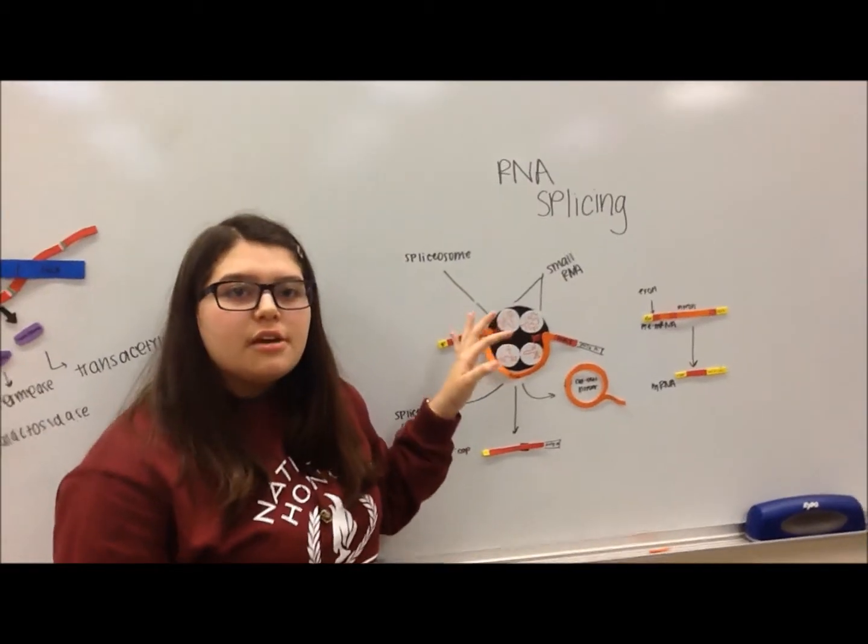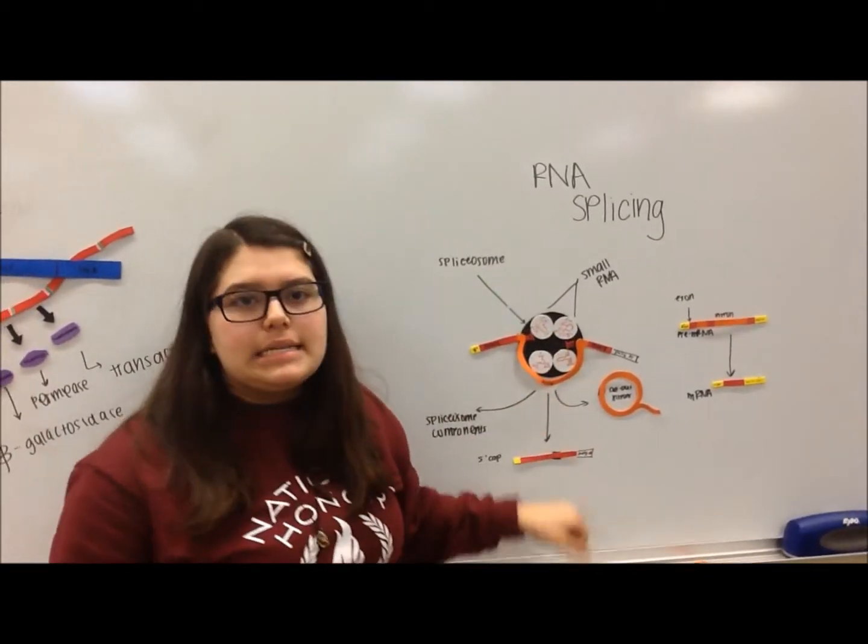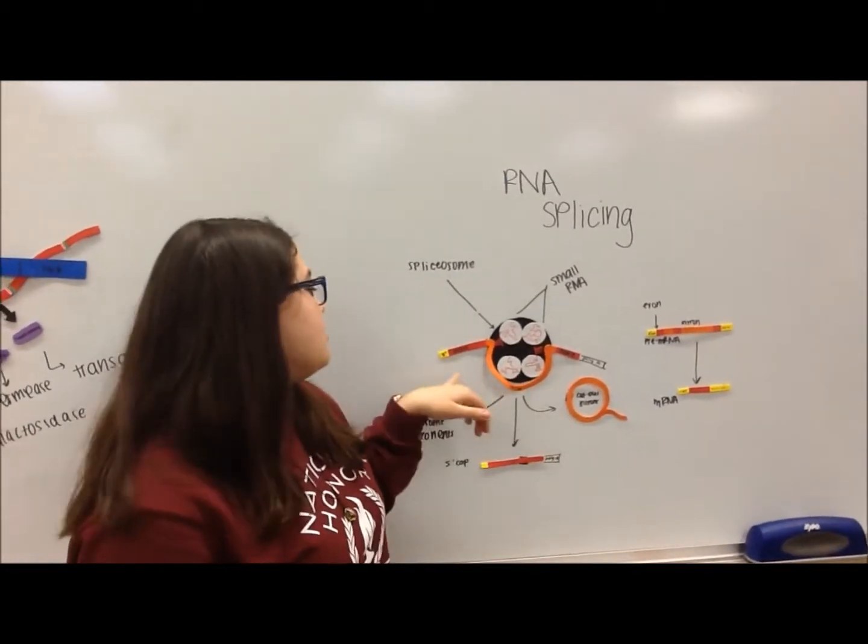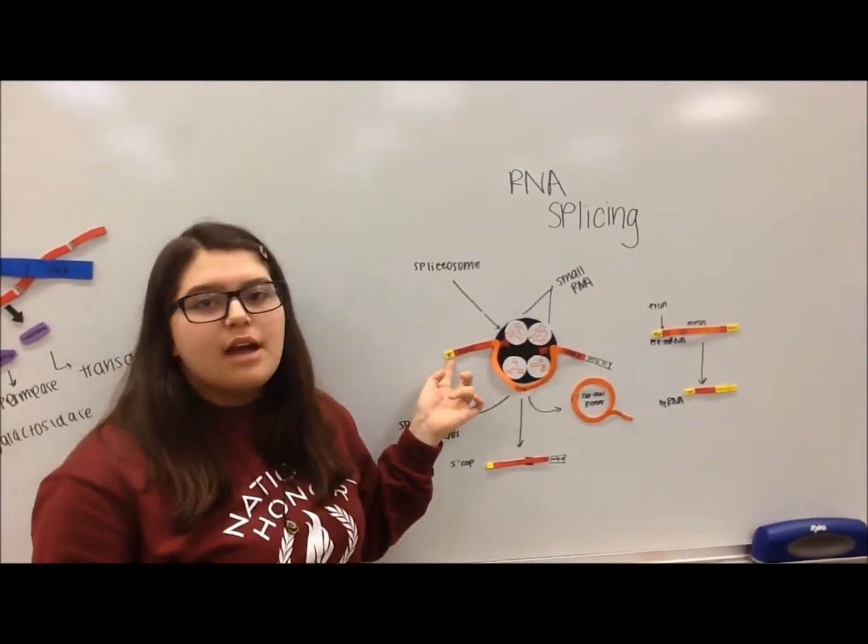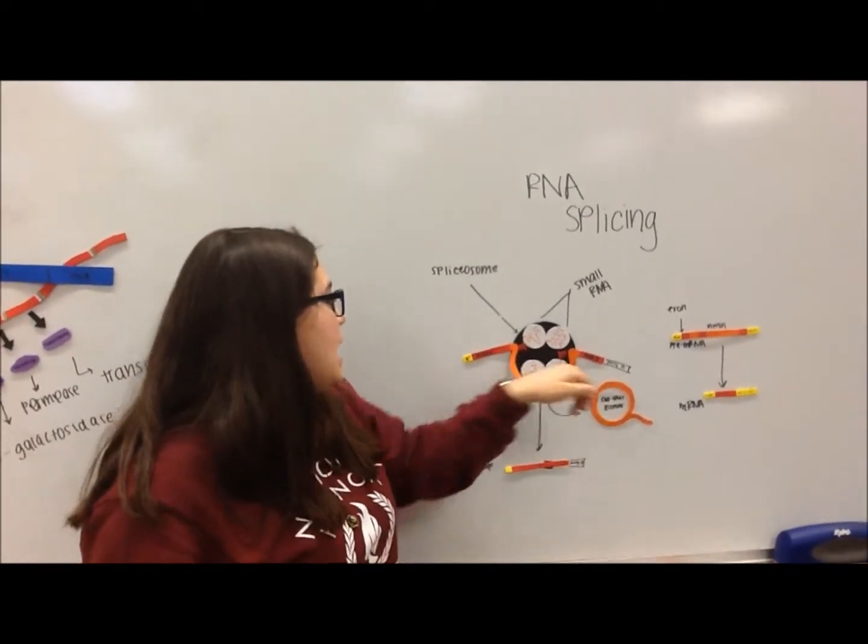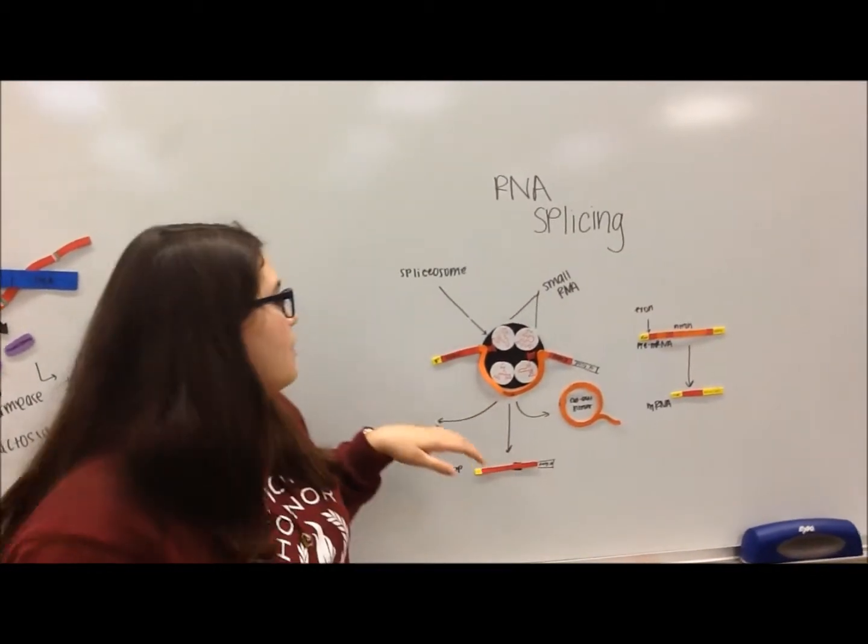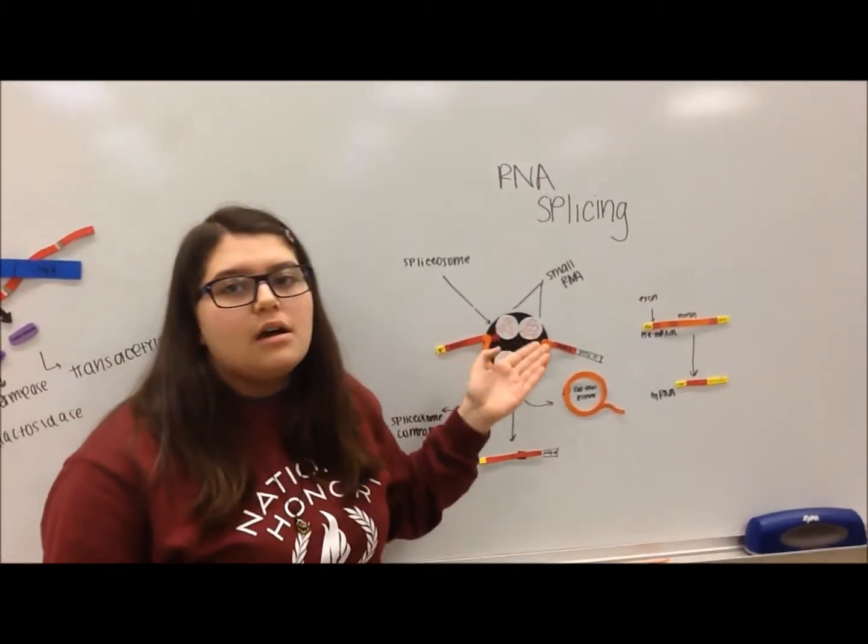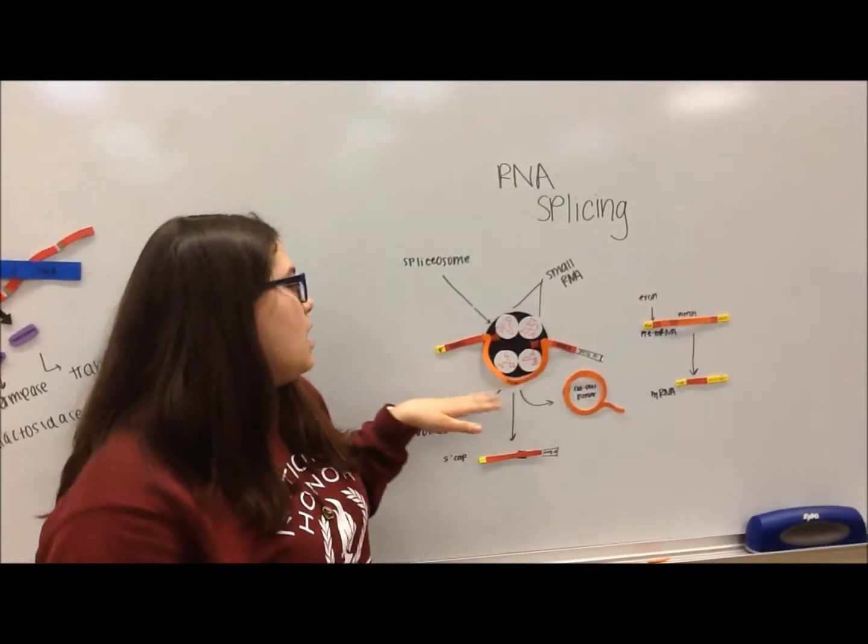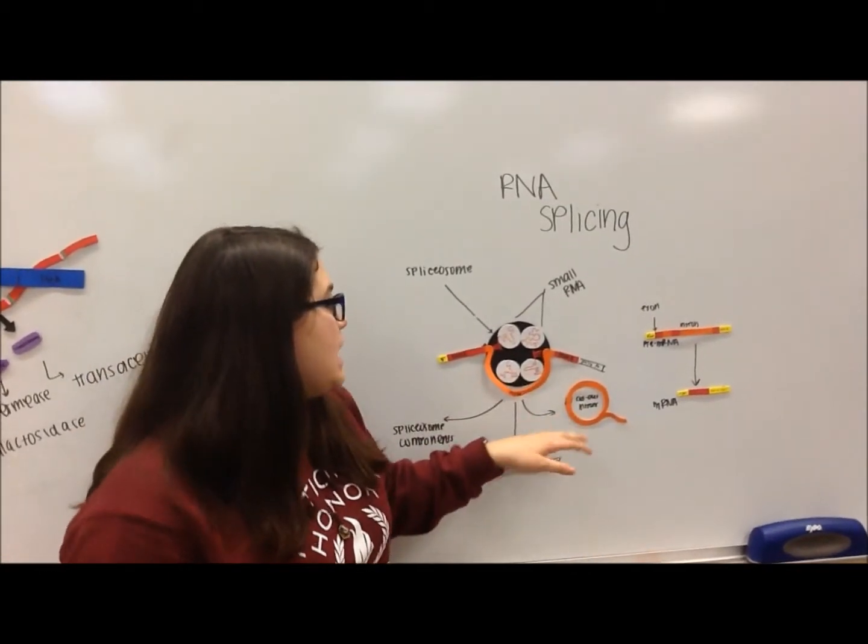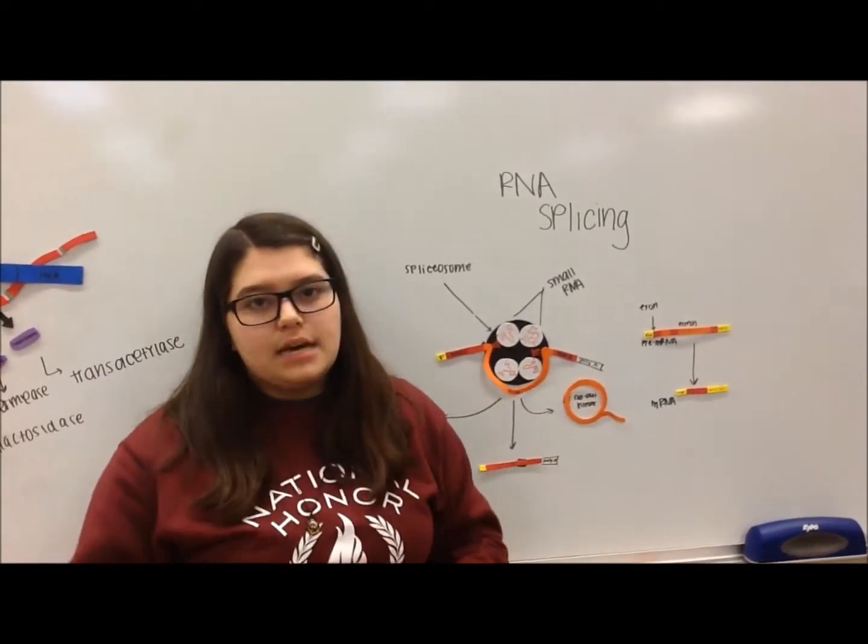In eukaryotes, the mRNA has to be processed before it can exit into the cytoplasm. First, a 5' cap is added to the 5' end of the RNA, and a poly-A tail is added to the 3' end. The pre-mRNA has to go through RNA splicing, where the introns are cut out and the exons are spliced together.